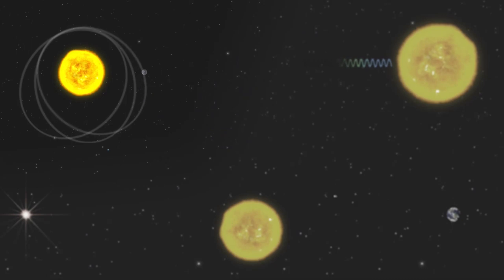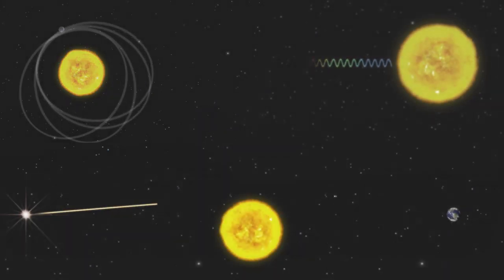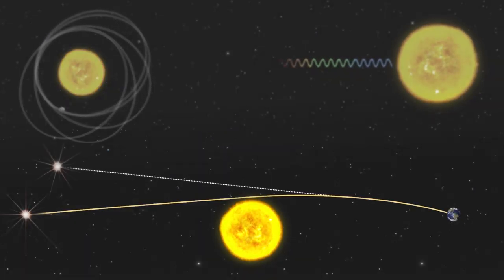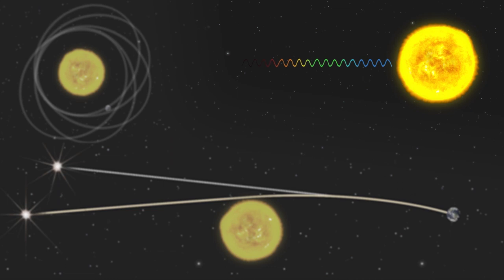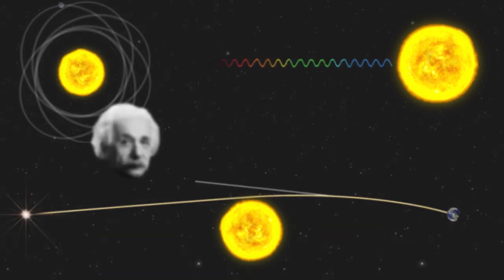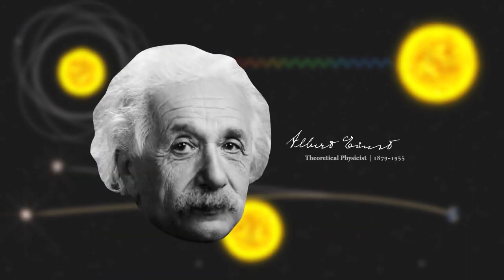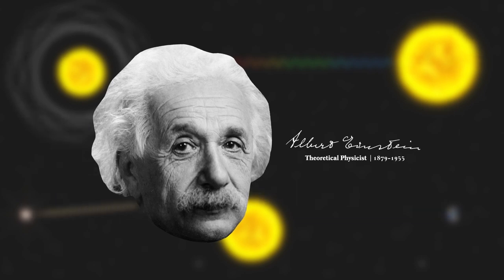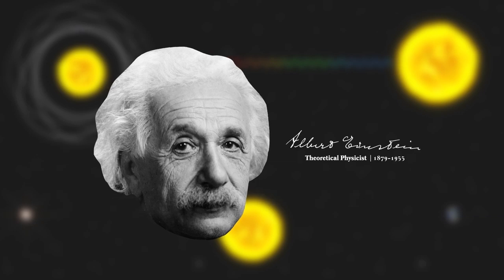The perihelion precession of Mercury's orbit, the deflection of light by the Sun, and the gravitational redshift of light are tests proposed by Albert Einstein to prove his general theory of relativity, the current understanding of gravity in the universe.